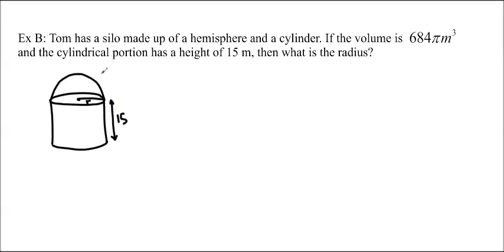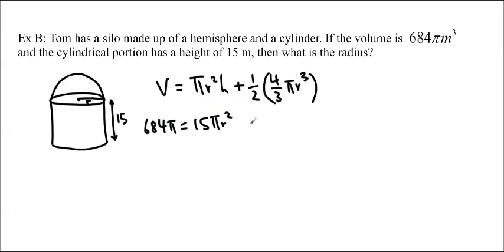And the volume is 684π. So I want to know what the radius is. So the volume is going to be the area of this cylinder, which is πr²h, plus the volume of a sphere, 4/3πr³, times 1/2, because it's 1/2. And we do expect you to know these formulas, so I'm just going to simplify it and put these values in. So volume is 684π, and the height is 15, so 15πr² plus, and this divides out, so I get 2/3πr³, like that.